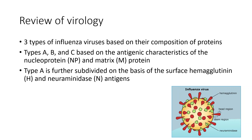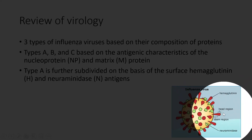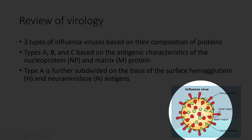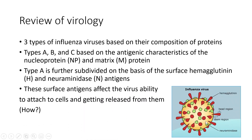Type A is further subdivided on the basis of the surface hemagglutinin (H) and the neuraminidase (N) antigens. These surface antigens affect the virus's ability to attach to cells and to get released from them.